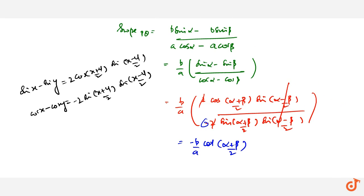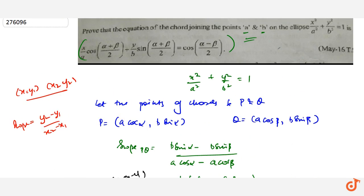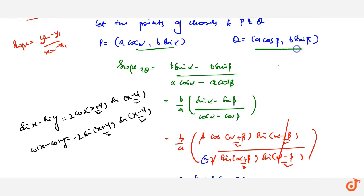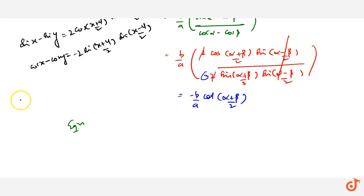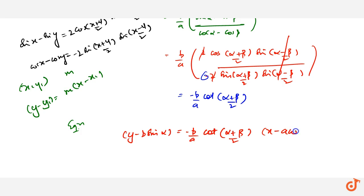Now let's find the equation of the chord PQ. We have both points and the slope. Using point-slope form y - y1 = m(x - x1), we get: y - b·sinα = -(b/a)·cot((α+β)/2) · (x - a·cosα).